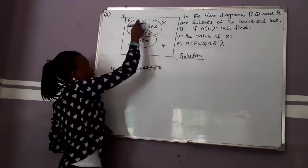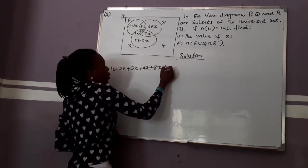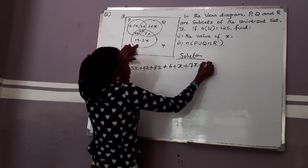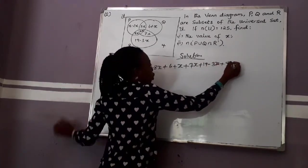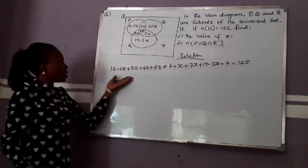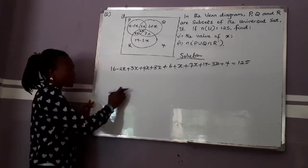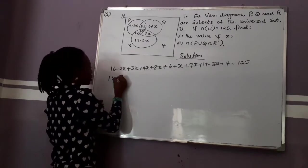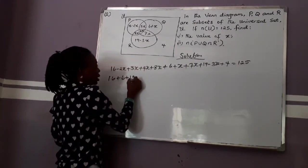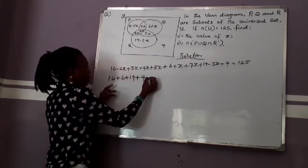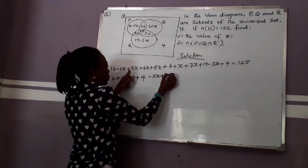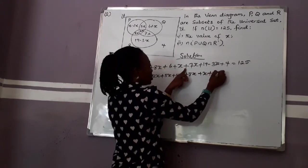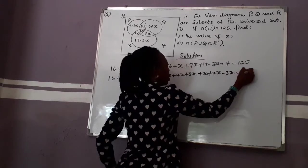Moving on to the next parts, since we have already picked the intersections there's no need repeating them. So we add: plus 6, plus X, plus 7X, plus 19 minus 3X, plus 4, equals 125. Now collect like terms — numbers together and X terms together. We have 16 plus 6 plus 19 plus 4, and then minus 2X plus 5X plus 4X plus 8X plus X plus 7X minus 3X, equals 125.